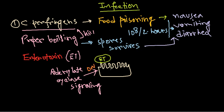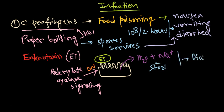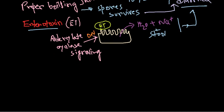As the adenylate cyclase signaling is kept on throughout the time, it keeps all content in the lining active. As a result, the cell starts releasing massive amounts of water with sodium ions outside. As water and sodium ions come out with stool, we simply know this as diarrhea — that is the symptom we see from the enterotoxin produced by Clostridium perfringens.